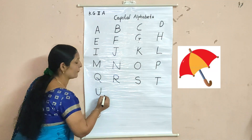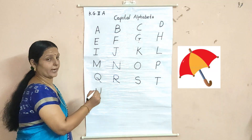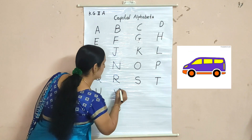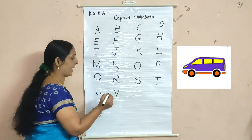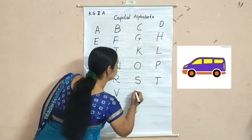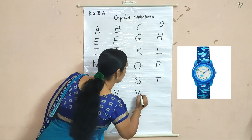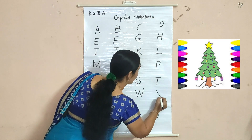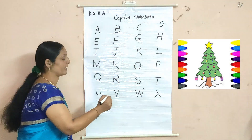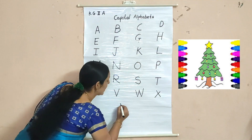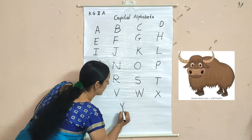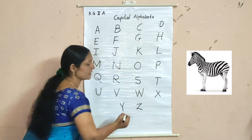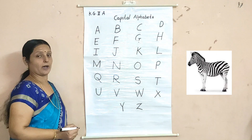U for umbrella, V for van, W for watch, X for Xmas tree, Y for yak, Z for Zebra.